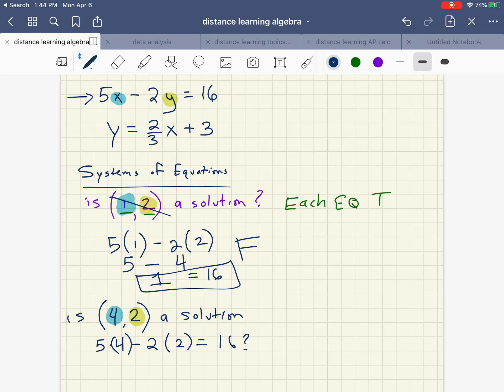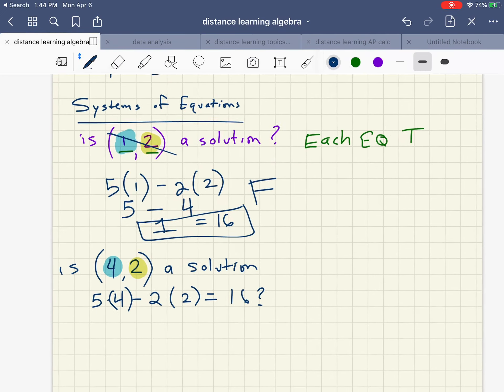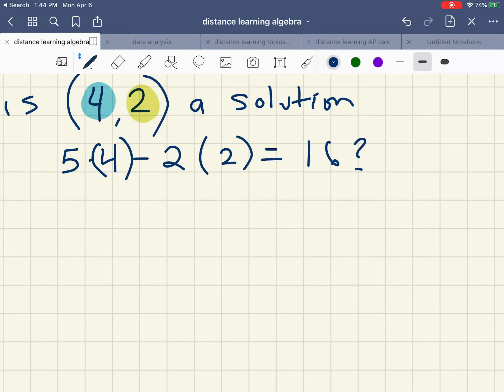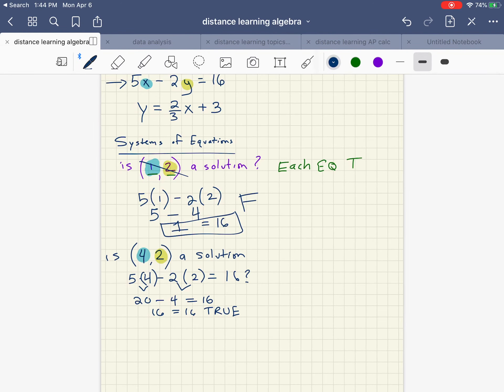Because it has to be true for both. I'm going to try one, if it's true for that one great, and then I'll try the other one. So this is equal to 20, 2 times 2 is 4, and quickly we can figure out that 16 does equal 16. So this is true for that first equation. All right, we're off and running.